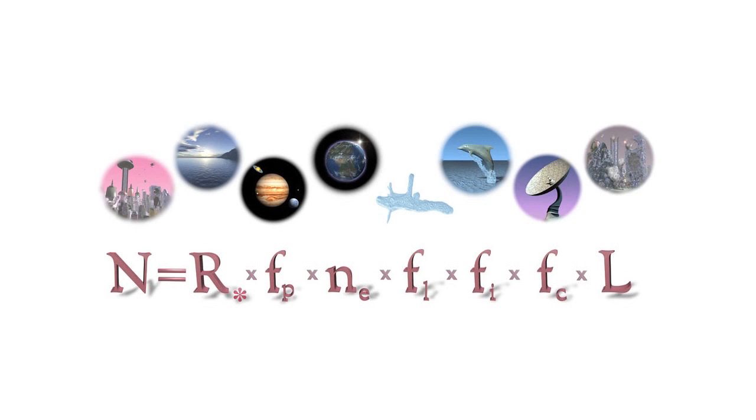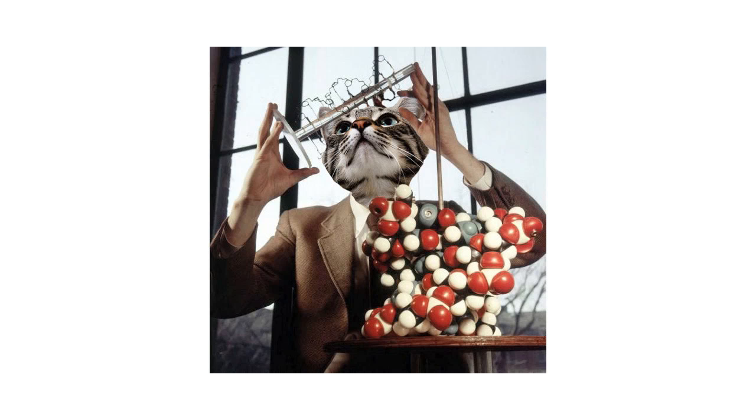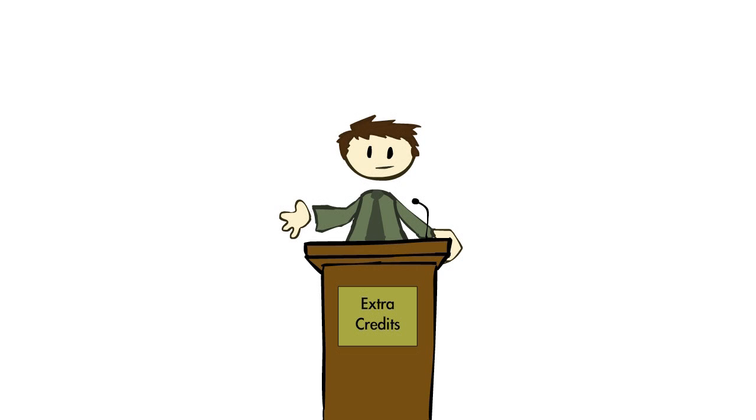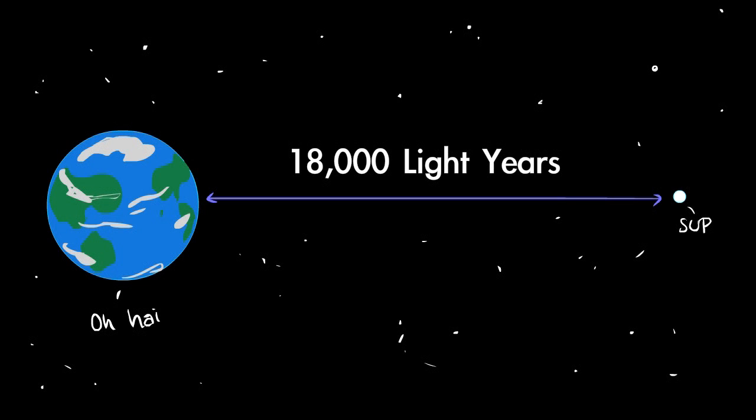We used the Drake equation to take a probabilistic look, a rough guesstimate, of how many intelligent civilizations there were in our galaxy. This led to the conclusion that the nearest civilization is, on average, probably about 18,000 light years away.